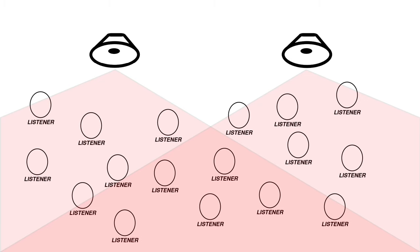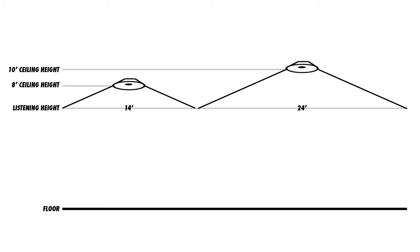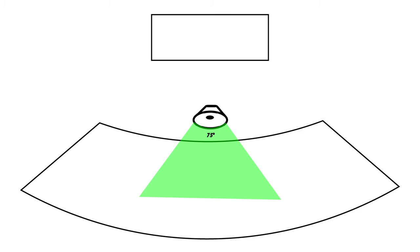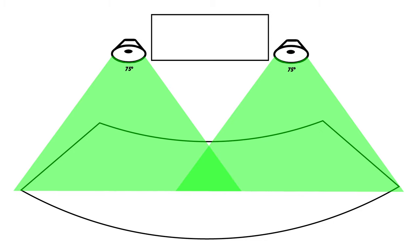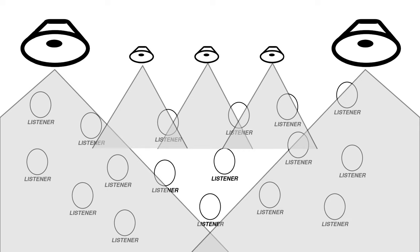It's important to understand the relationship between the coverage pattern of a speaker and its placement. The coverage area becomes larger at longer distances from the speaker. A ceiling speaker with a 135-degree coverage pattern might cover a 14-foot diameter from an 8-foot ceiling height, but that same speaker could cover a 24-foot diameter from a 10-foot ceiling height, because there's more distance for the sound to spread out. That means more speakers are required to cover the same area when the ceiling height is lowered. Similarly, a 75-degree surface-mounted speaker on each side of the stage might cover the entire audience if there's enough distance between the speaker and the audience. Often, fill speakers will be used to cover areas not fully covered by the main speakers.